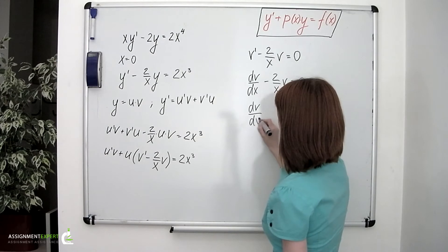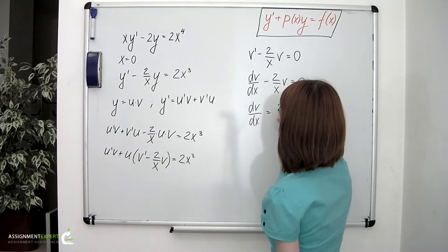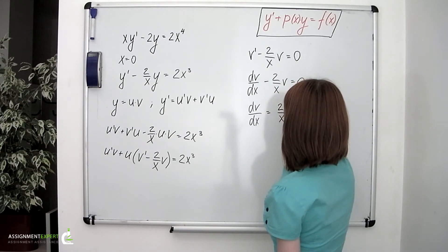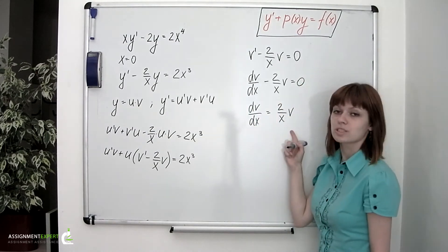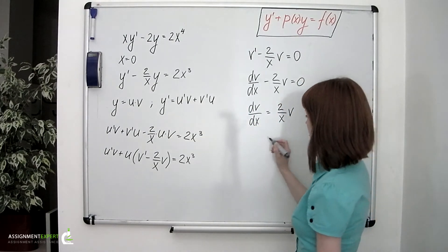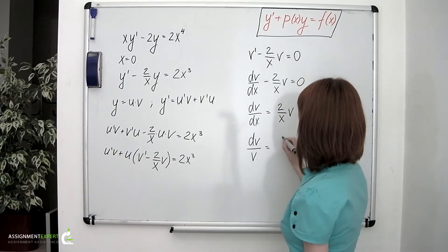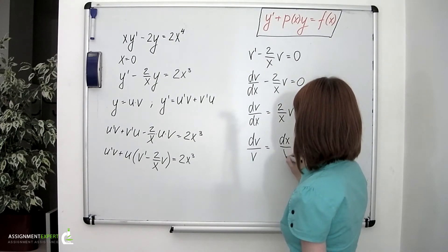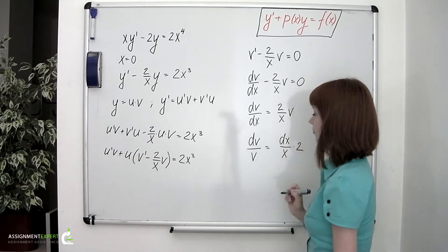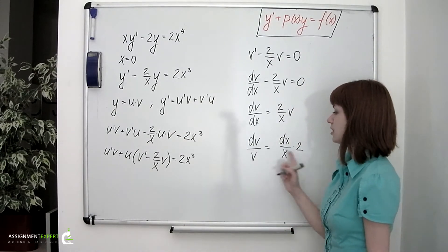dv over dx equals 2 over x times v. And this is an equation with separable variables. So we'll have dv over v equals dx over x multiplied by 2. And integrating both the left and the right sides.